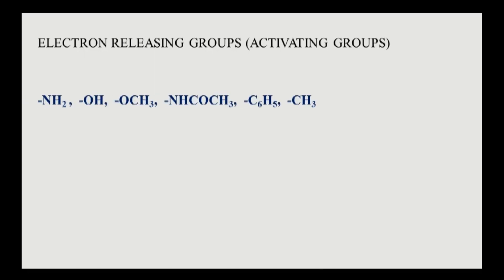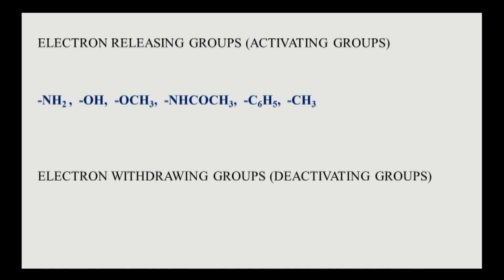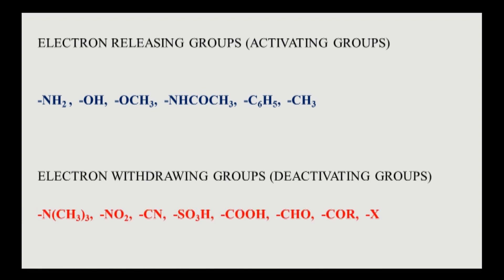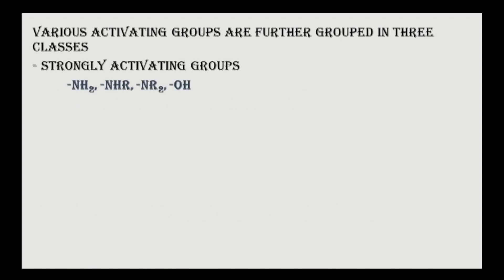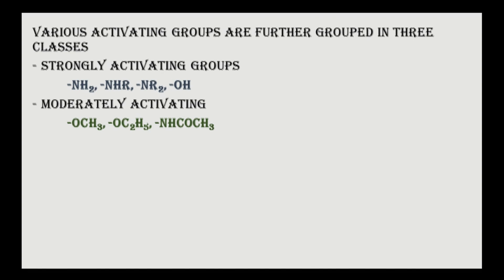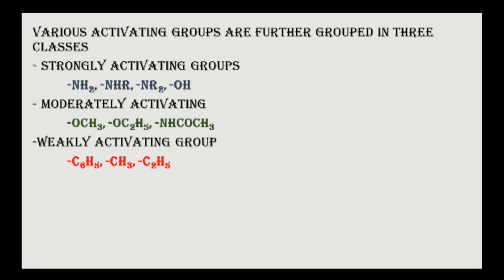Electron-releasing groups are called activating groups. These include amino, hydroxy, methoxy, acetyl, phenyl, and methyl. These are the activating groups, while the remaining are deactivating groups. Activating groups can be subclassified based on their activating power: strongly activating groups include hydroxyl, amino, and substituted amino groups; moderately activating groups include methoxy, ethoxy, and acetamido; and weakly activating groups include phenyl, methyl, and ethyl.